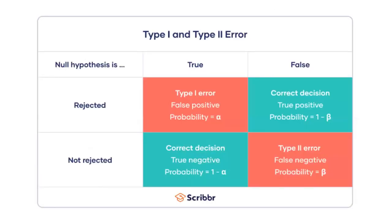This table helps us understand the error types. If the null hypothesis is true but we have rejected it, that is a Type 1 error — a false positive — and the probability is denoted by alpha. If the null hypothesis is true and we have not rejected it, the decision is correct — a true negative — with probability 1 minus alpha. If the null hypothesis is false and we have rejected it, that is a correct decision — a true positive — with probability 1 minus beta. If the null hypothesis is false but we have not rejected it, that is a Type 2 error — a false negative — and the probability is denoted by beta.